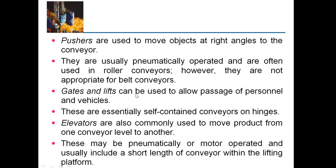Gates and lifts can be used to allow passage of personnel and vehicles — these are essentially self-contained conveyors on hinges. Elevators are also used to move products from one conveyor level to another; like a lift, they raise the product from one conveyor and place it onto another conveyor at a different height. This may be pneumatically or motor operated and includes a short length of conveyor within the lifting platform.